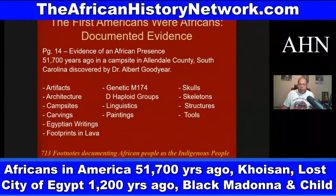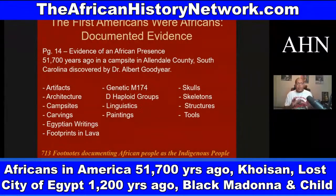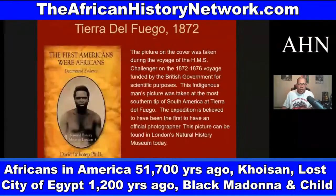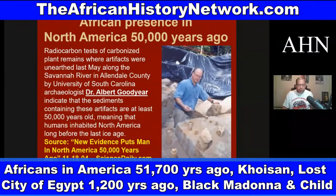They found artifacts, architecture, campsites, footprints, lava, genetic M174 haplogroups dealing with DNA and genetics, skulls, skeletal structures, and tools — 13 different types of evidence firmly documenting the African presence in this country dating back at least 51,700 years ago. Here's a picture of Dr. Albert Goodyear, and there was a good article from ScienceDaily.com dealing with his 2004 discovery.